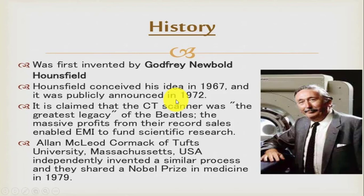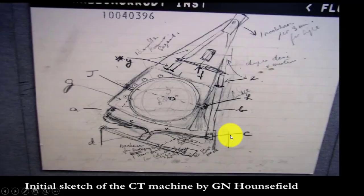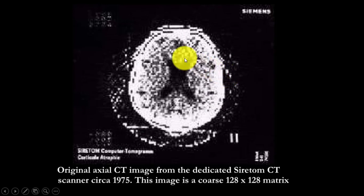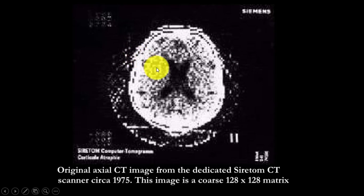The invention was considered the greatest legacy of the Beatles era, as massive profits from record sales enabled EMI to fund scientific research. This is the initial prototype CT scan machine by Hounsfield, and this is the first original CT image — a very coarse 128 by 128 matrix picture. Poor quality, but it was the start of a greatest invention.